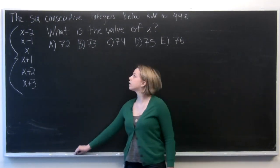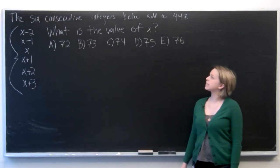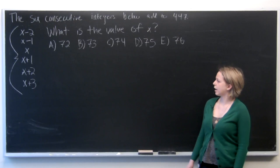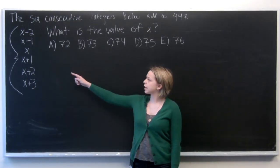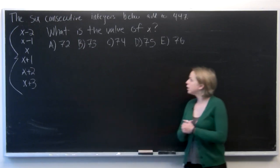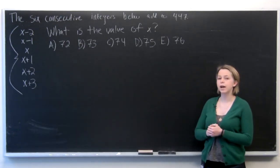So here in this problem our question reads, the six consecutive integers below add to 447 and our integers are x minus 2, x minus 1, x, x plus 1, x plus 2, and x plus 3. And so what we need to do is solve for the value of x.